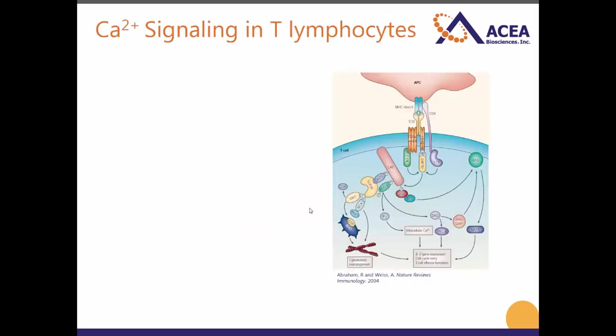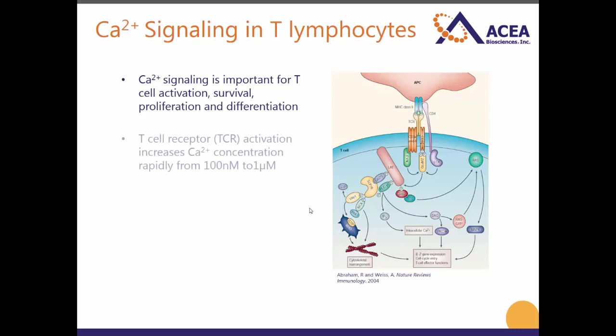Since I'm going to be showing calcium flux data from T cells, I just want to briefly overview calcium signaling in these cells. Calcium signaling is essential for T cell activation, survival, proliferation, and differentiation. The T cell receptor engagement, which is the first step in T cell activation, rapidly increases calcium concentrations in these cells. The increased calcium is important for activating key downstream molecules in this signaling pathway such as calcineurin.